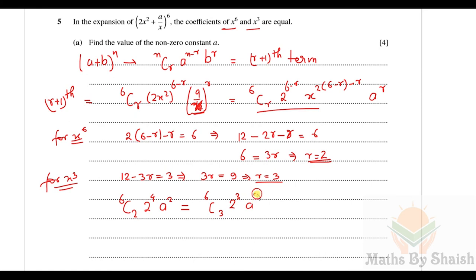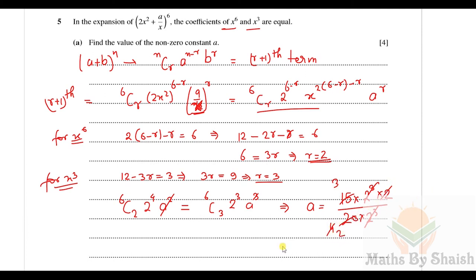Setting the coefficients of x⁶ and x³ equal: 6C2 × 2⁴ × a² = 6C3 × 2³ × a³. The a² and 2³ terms cancel from both sides. We get a = (6C2 × 2⁴) / (6C3 × 2³) = (15 × 16) / (20 × 8) = 240/160 = 3/2. So the value of the non-zero constant a is 3/2.